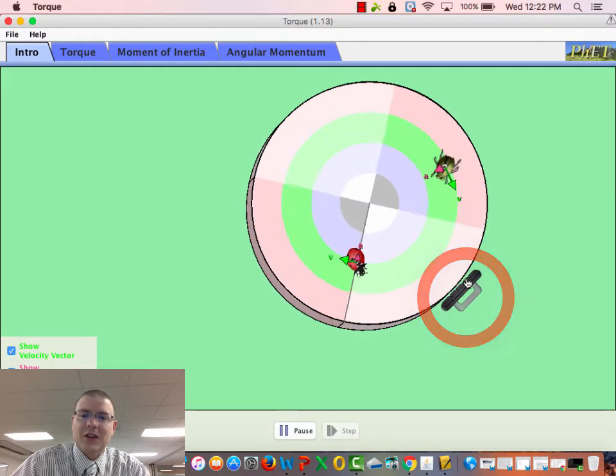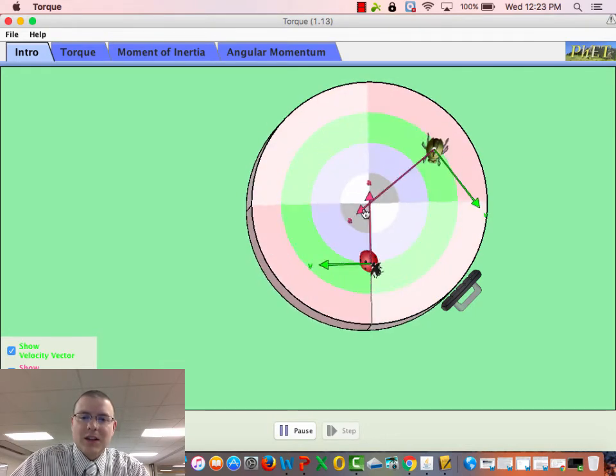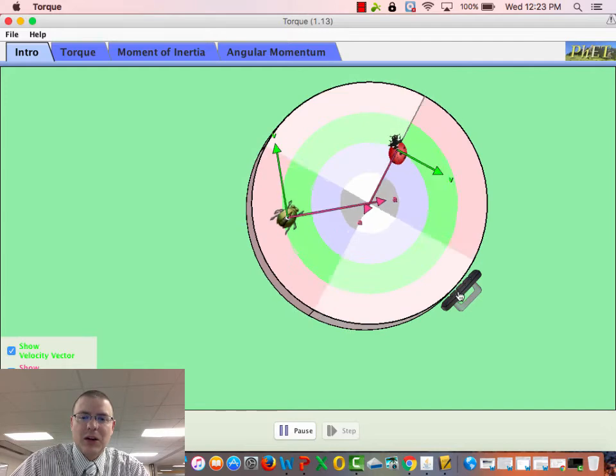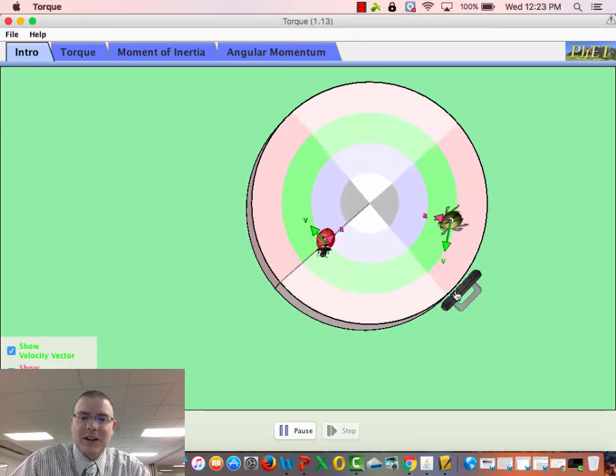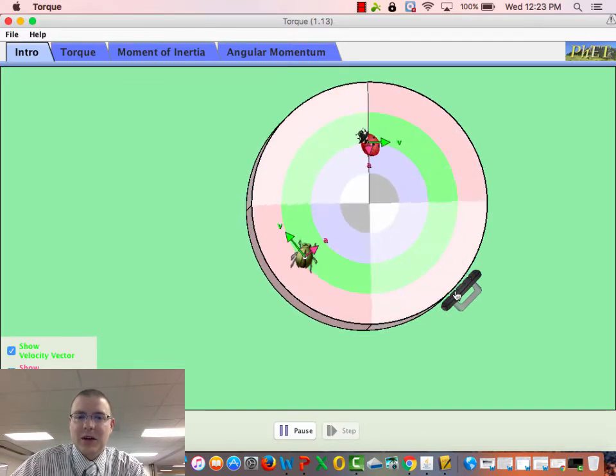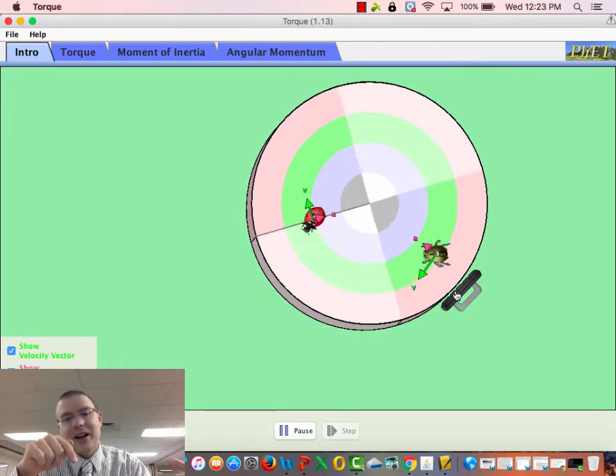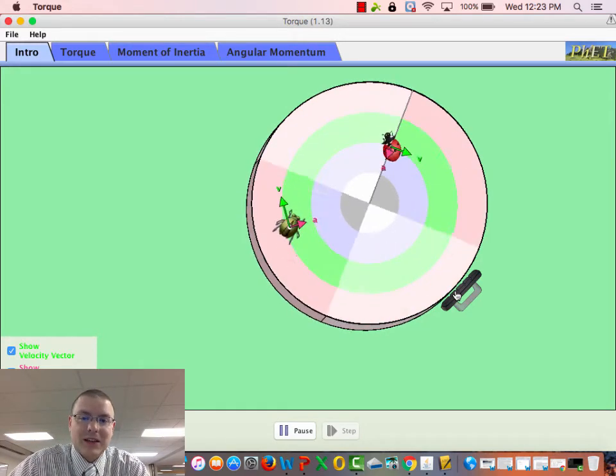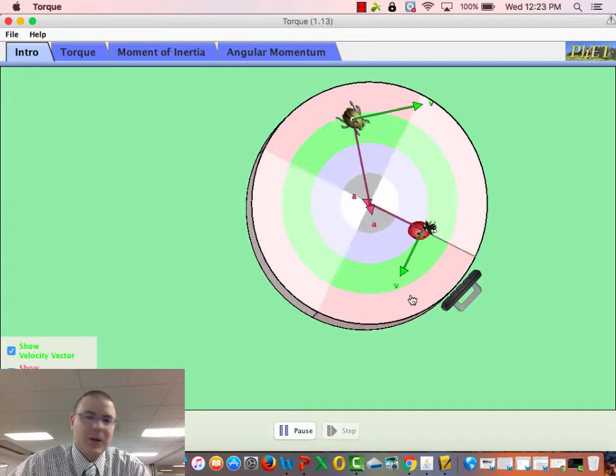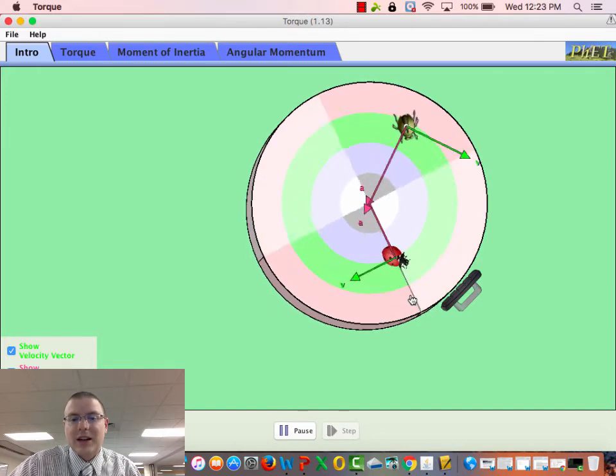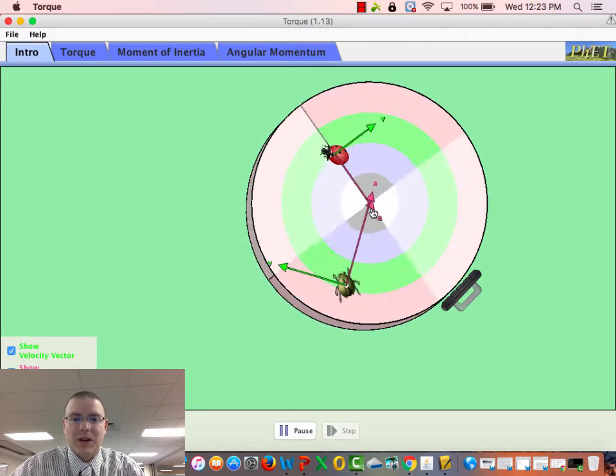And one other thing this simulation does show is watch the accelerations as I make this go faster or slower. So right now we said this is an inward centripetal acceleration. When I put the brake on, you can see the acceleration lags behind the bugs because that is the net acceleration. It still has v squared over r inwards, but it also has a tangential acceleration back against it. When I speed it up, the acceleration heads off in front of the bug because there's a linear tangential acceleration as well as a centripetal acceleration. So the net acceleration is the combination of both accelerations.